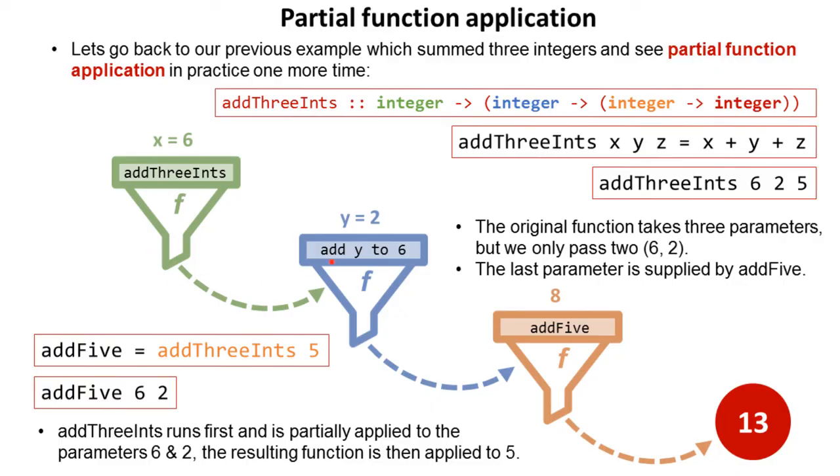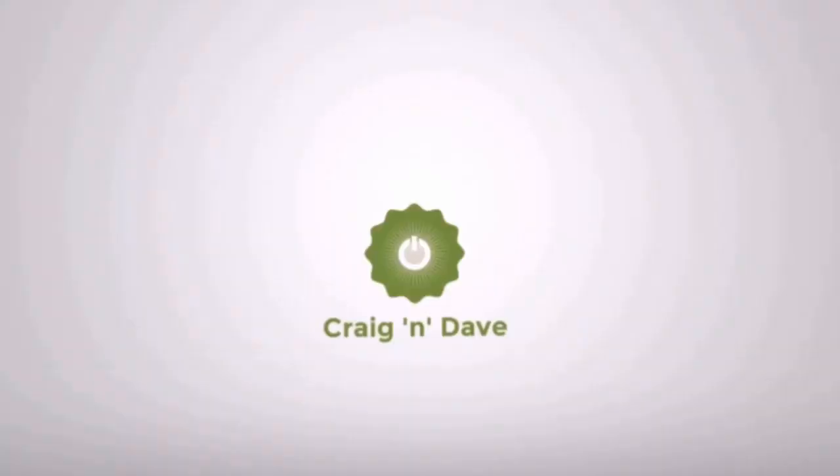And we can see that process happening here. The result, of course, is the same as just calling addThreeInts and supplying it with six, two, and five.